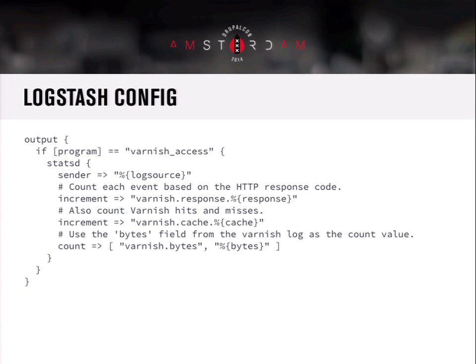One way to get information into StatsD is to use Logstash. If you're already parsing access logs, you can do things like this: in the output stanza of a Logstash config, you can say if it's a 'varnish_access' program, use a StatsD output, set the sender to the log source, and increment a response counter to say 'I got another 200.' That'll keep going for whatever the flush interval is, then write out to Graphite. You can actually use your log aggregation daemon to get some of these metrics — for example, increment a counter for how many bytes came in during a particular time window.